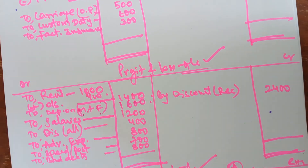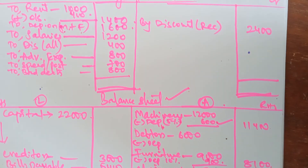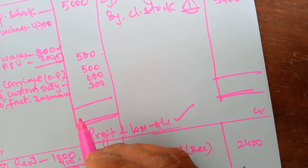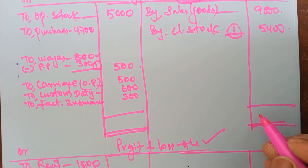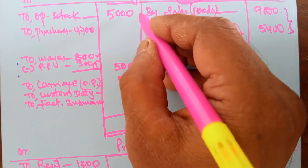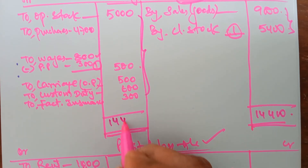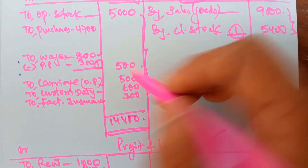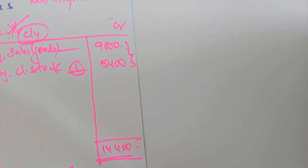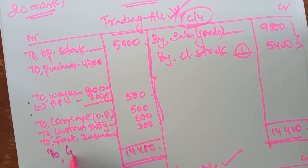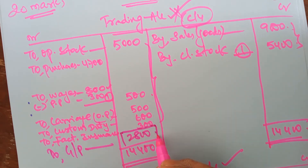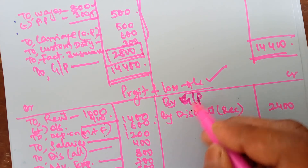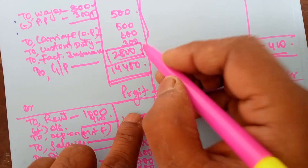There is no RBD adjustment — take it as is to the outer column. Now balance the trading account. The higher total is 14,400 — put it on both sides. The other side totals 6,900. From 14,400 if you deduct 6,900, the gross profit is 7,500. Transfer this straight away to the profit and loss account. To calculate gross profit: from the credit amount deduct the debit amount — that gives you the gross profit, which is transferred to profit and loss account.